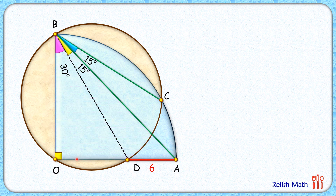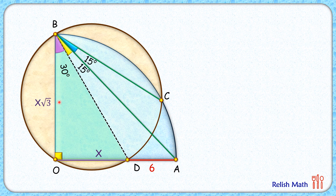Now let's name the length OD as x centimeters. Checking triangle BOD — it's a right-angle triangle — so by trigonometry the length BO equals x times cot 30, and cot 30 is root 3. So the length BO will be x times root 3. Now since BO and OA are both radii of the blue quadrant, they are equal. So we can say that x plus 6 equals x times root 3.